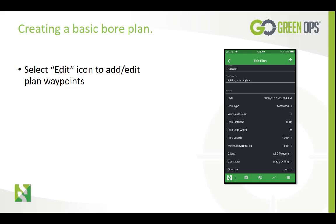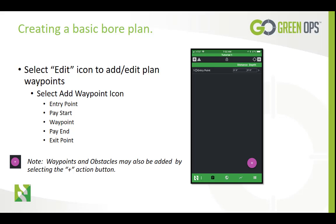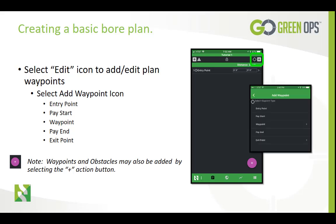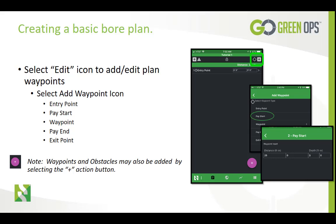Now we're ready to add our waypoints. Select the edit icon from the bottom of the screen, then select the add waypoint icon. You can choose between an entry point, a pay start, a standard waypoint, your pay end, or an exit point. You can see that an entry point is automatically added to the plan with depth and distance defaulting at zero. All other waypoints are measured from this first entry point. For this tutorial we will now select pay start, change our distance to 25 feet, and set our desired board depth to 3 feet.